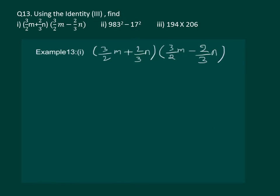Please see the question on the slide. We have to multiply the two binomials, 3 by 2m plus 2 by 3n with 3 by 2m minus 2 by 3n. This question is comparable to our identity number 3, a plus b into a minus b is equal to a square minus b square.